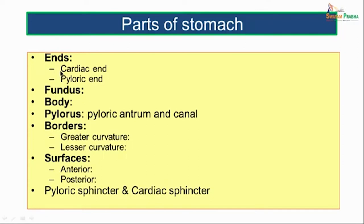The pylorus is further divided into the pyloric antrum and pyloric canal. The two ends are the cardiac end and pyloric end. The borders are the greater curvature and lesser curvature. The surfaces are the anterosuperior and posteroinferior surfaces. The two openings — the cardiac and the pyloric — are guarded by the cardiac sphincter and the pyloric sphincter respectively.